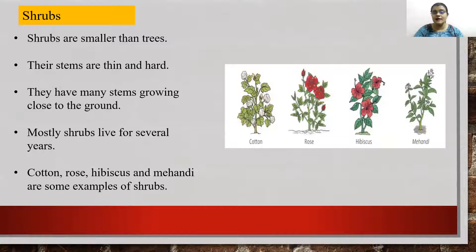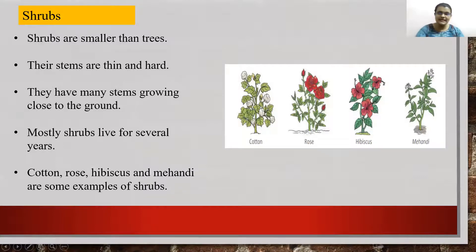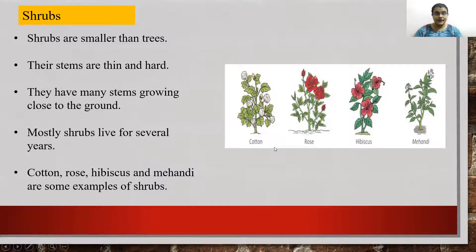Now we will move to shrubs. Shrubs are smaller than trees. Their stems are thin and hard. They have many stems which grow close to the ground. Mostly shrubs live for several years. Examples are cotton, rose, hibiscus and mehendi — these are some examples of shrubs.